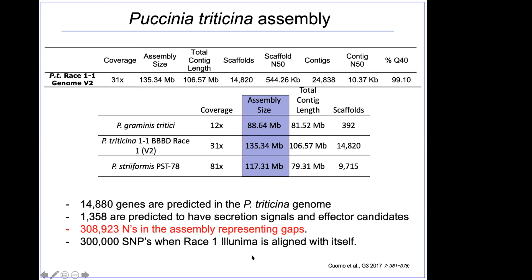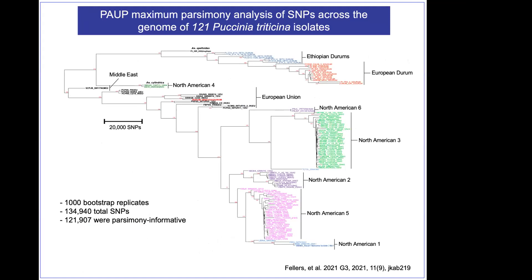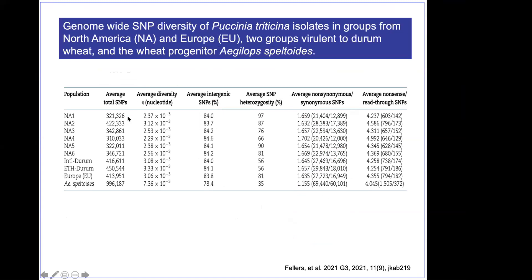With Jim Comer's help, we identified 121 different races of Puccinia triticina and sequenced them using Illumina, went back to the genome, looked for SNPs, and did comparisons. These are the various clades we came about — it backed up data that Jim already had. The Speltoides here is from an Aegilops we think is probably one of the progenitors of the races we know, but the Ethiopian Durums and North American clades were very unique. Race one that we sequenced is shown in this clade.